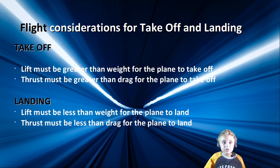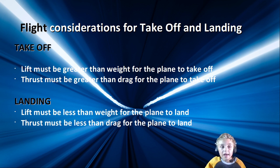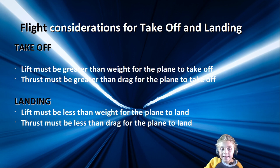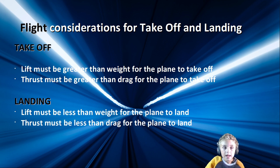So, a quick summary. For takeoff, lift must be greater than weight for the plane to take off, and thrust must also be greater than drag. But on landing, lift must be less for the plane to descend, and thrust must be less than drag for the plane to land — otherwise the plane will go into an overspeed and crash.